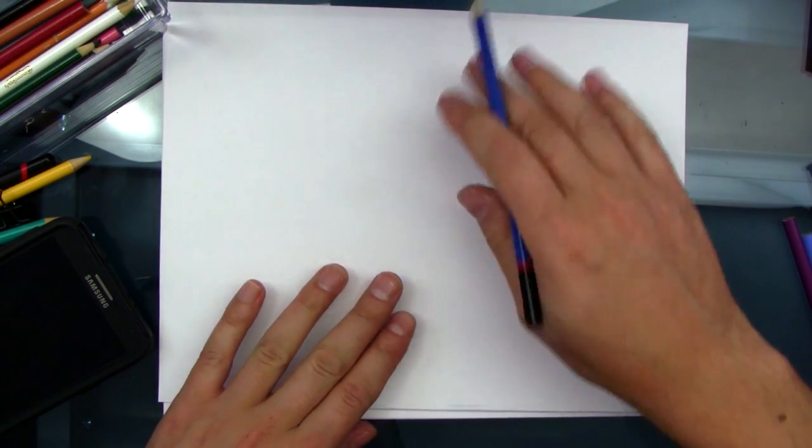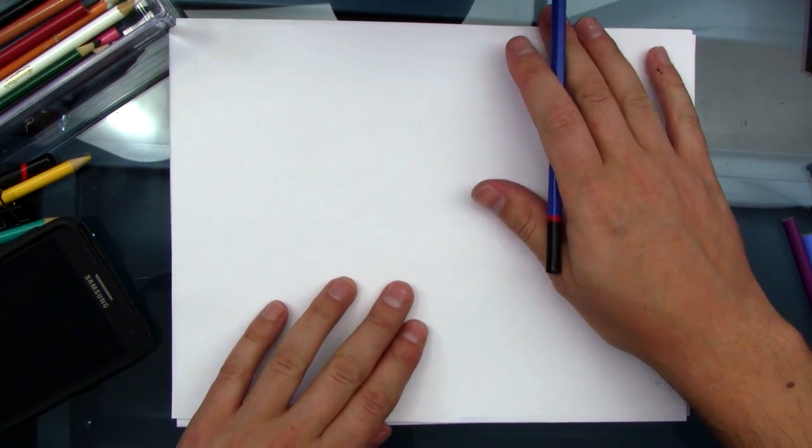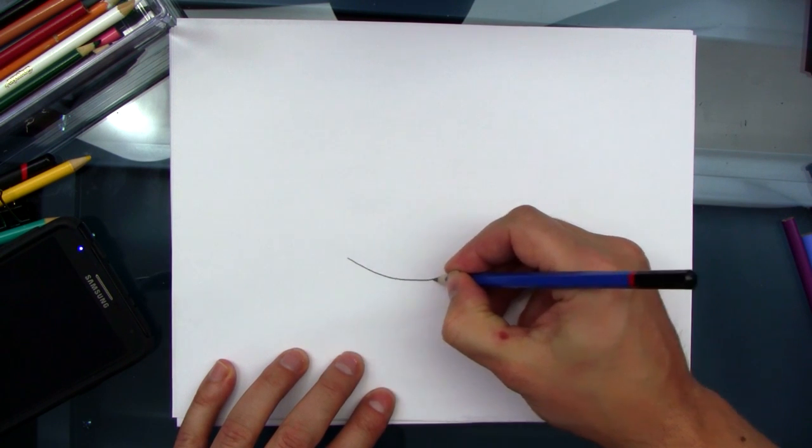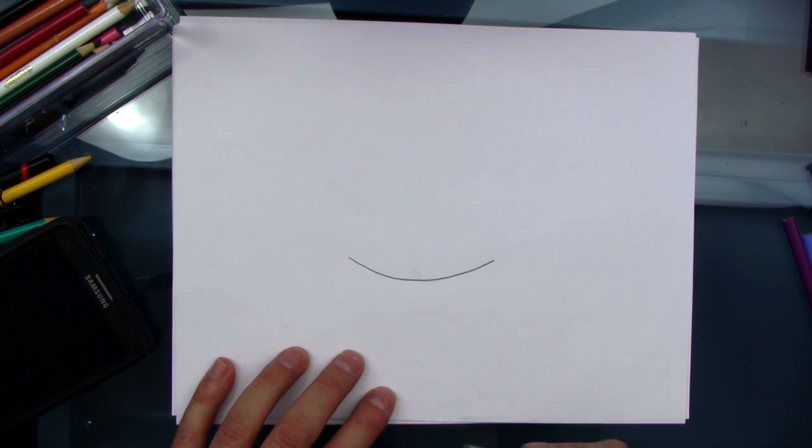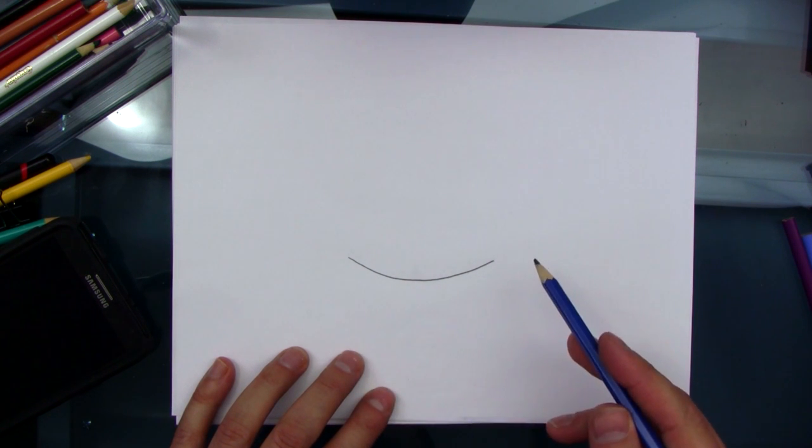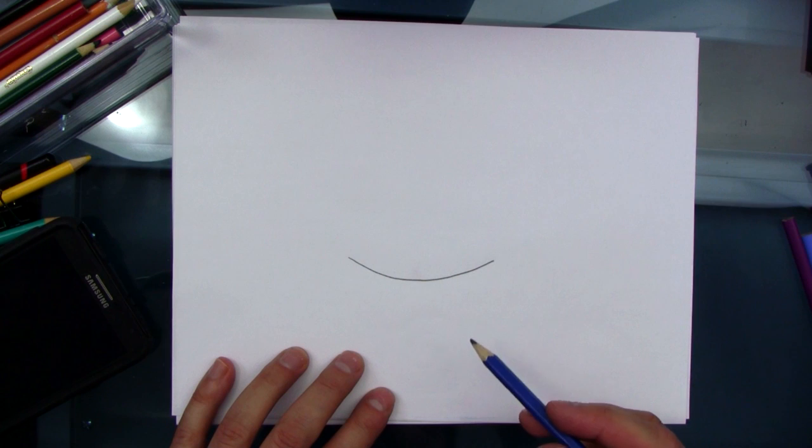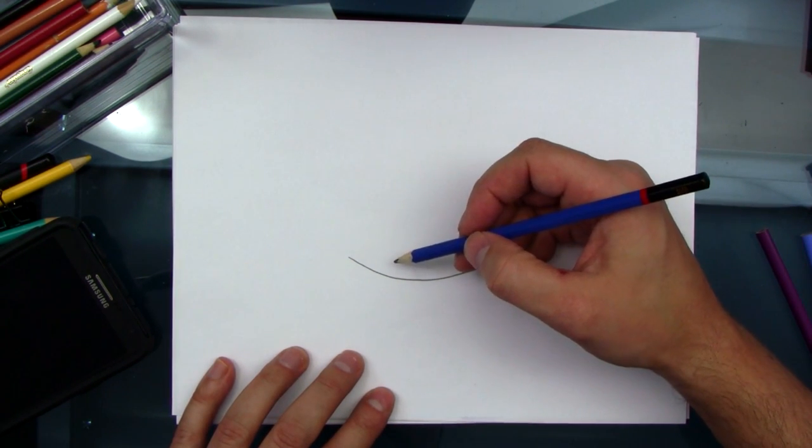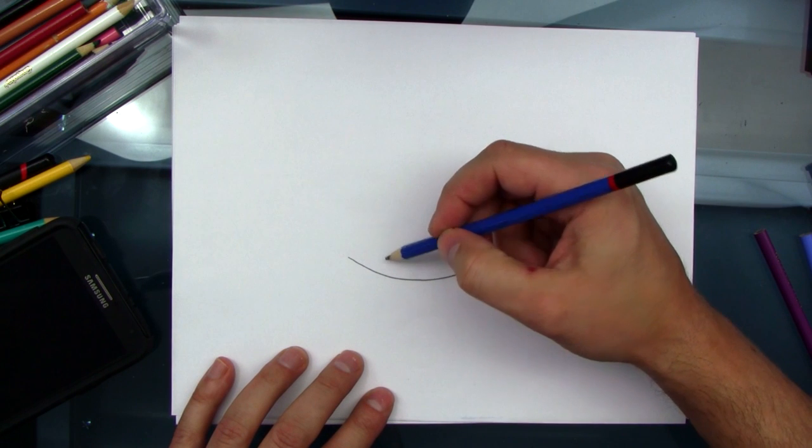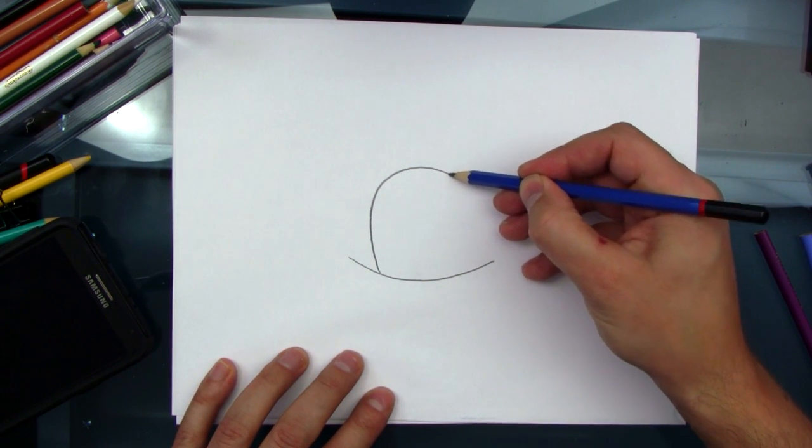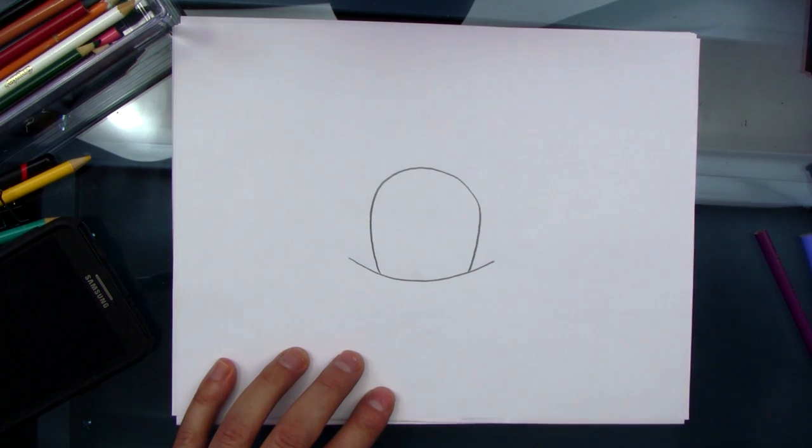with a pencil. You knew that. First, we're gonna start with a line, kind of like a smiling face or smile. Not a really crazy smile. Just a generally happy smile. Next up, we're gonna draw a cave. A cave, if you will. Like this. There.